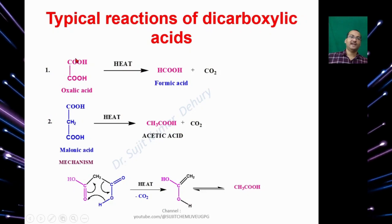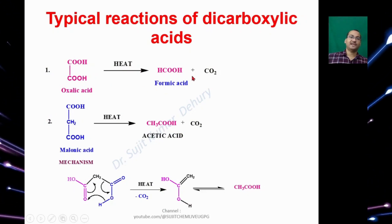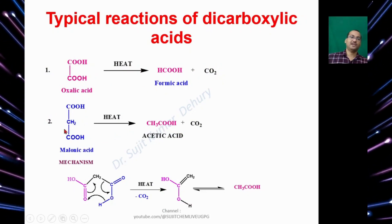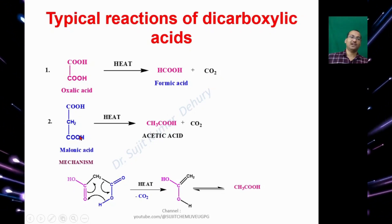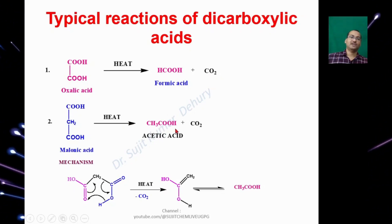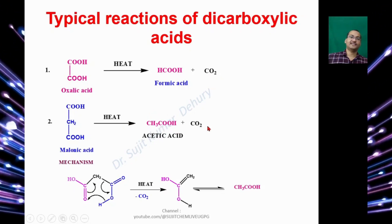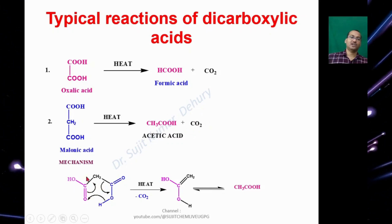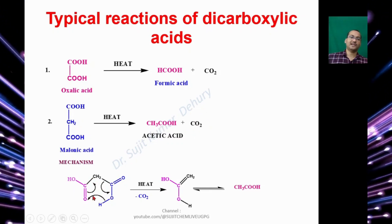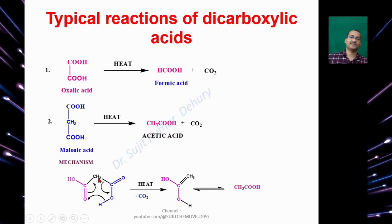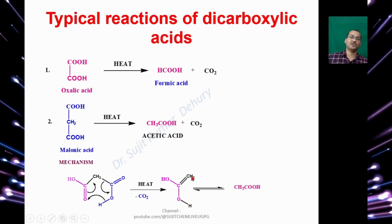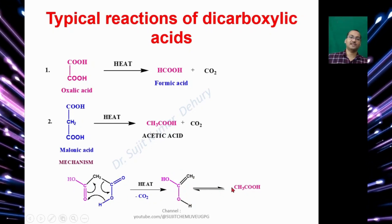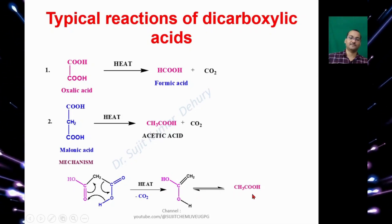When we heat Oxalic Acid, we get Formic Acid and Carbon Dioxide. Similarly, if we heat Malonic Acid, we get Acetic Acid and Carbon Dioxide. Here the bond making and bond breaking takes place in a cyclic manner, giving rise to the enol form of Acetic Acid, which tautomerizes to give Acetic Acid.